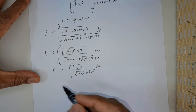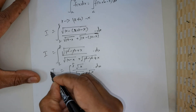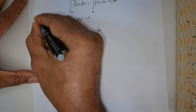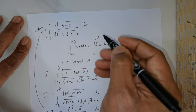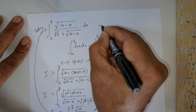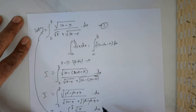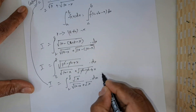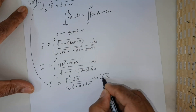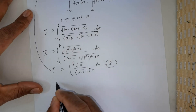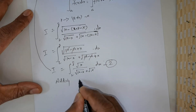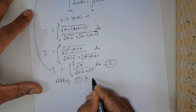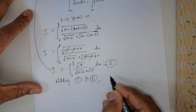Now, what I am going to do is add this I with this I. You can take the first expression as equation 1, the second as equation 2, and say: adding 1 and 2 we get...